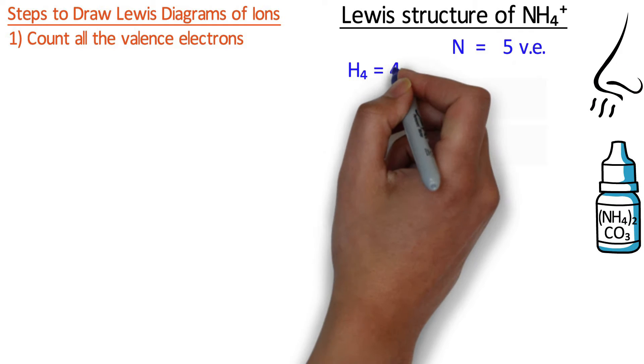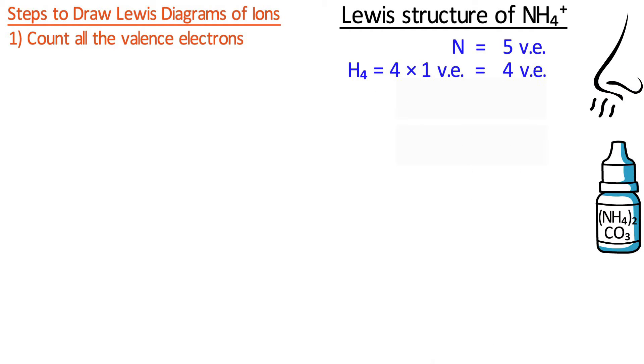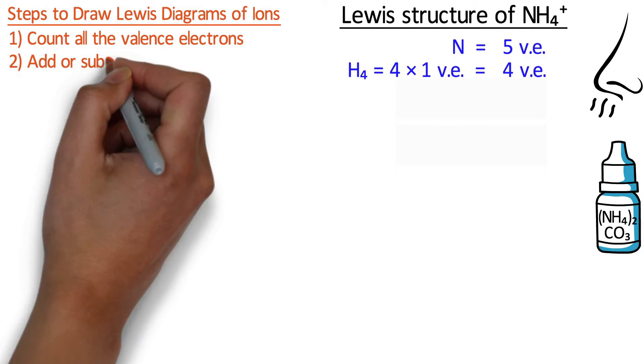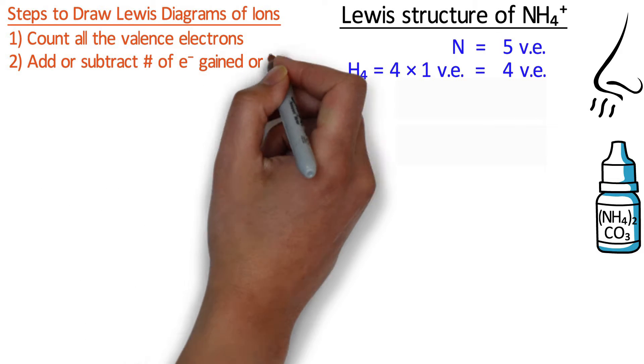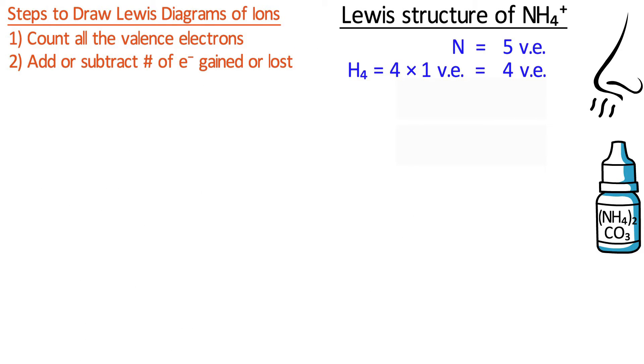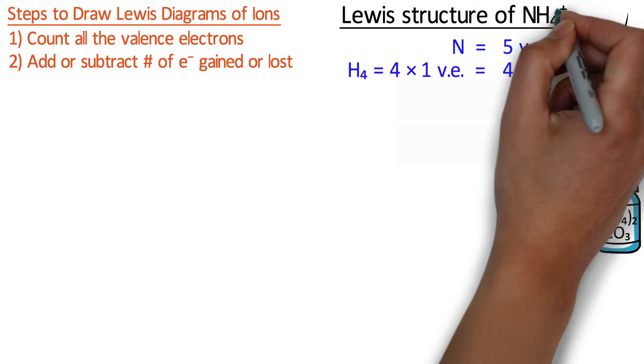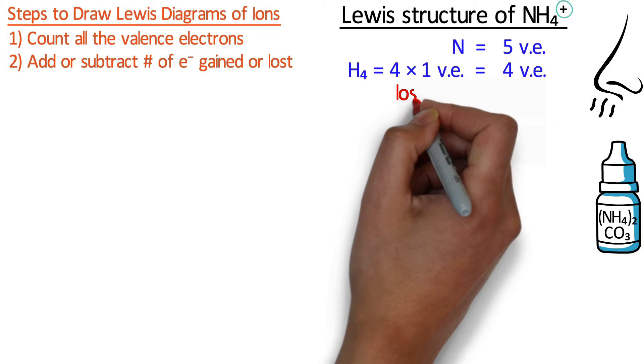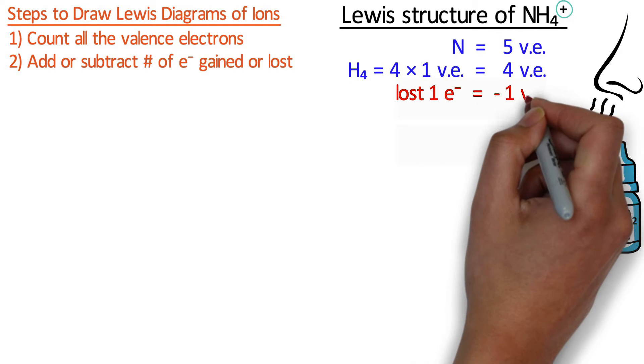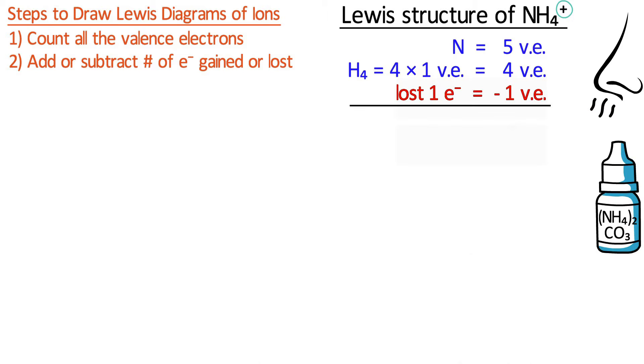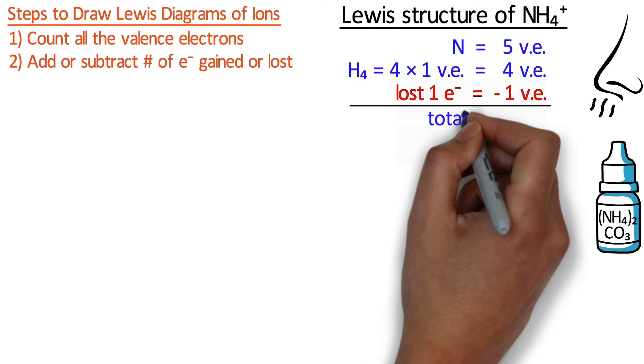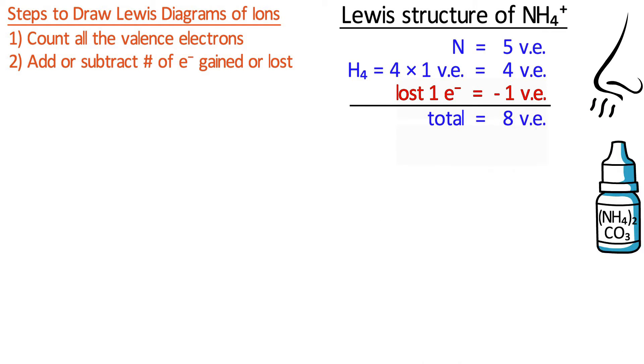Nitrogen has five valence electrons and each hydrogen has one electron. Next, add or subtract the number of electrons gained or lost by the ion. Since this is a cation with a positive one charge, it has lost one electron, so we subtract one from our valence electrons, giving us a total of eight valence electrons.